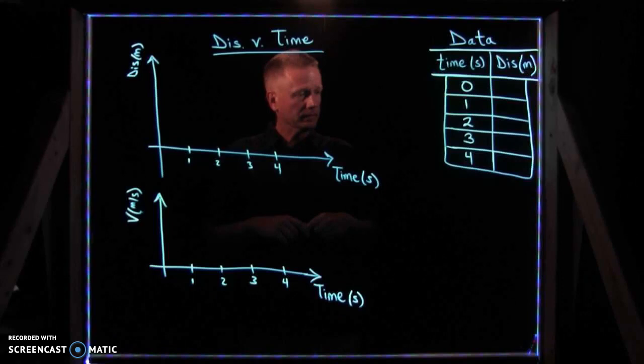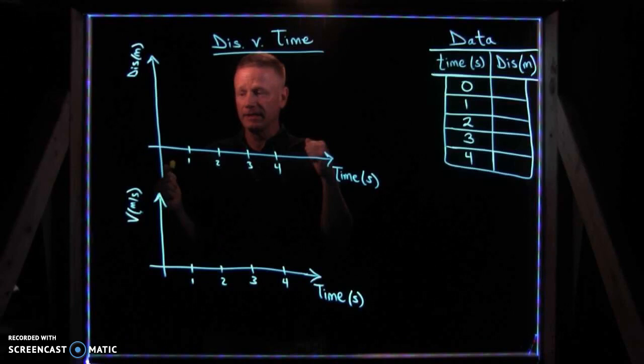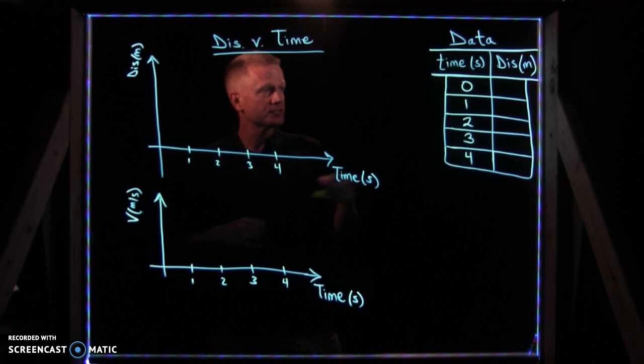Okay, welcome. This is an introduction to connecting multiple representations of an example of motion, that is motion in a straight line at a constant speed, in other words constant velocity.